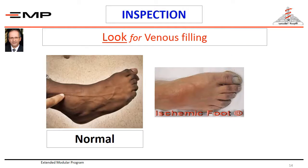Veins of a normal foot are dilated and are full of blood, even when the patient is lying horizontal. In an ischemic foot, the veins collapse and sink below the skin surface to look like pale blue gutters. Sometimes we call this guttering of the veins. Note that this is very evident in acute ischemia.